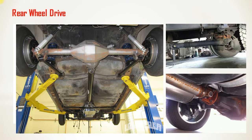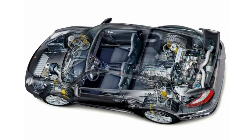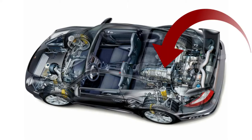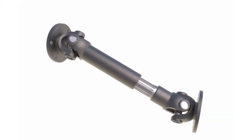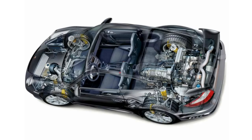In the second option, if the engine is fitted at the rear side and drive is also given to the rear wheels, it becomes rear engine rear wheel drive. In this type of layout, the engine is fitted at the back side of the car and drive is given to the rear wheels. This arrangement eliminates the necessity of a propeller shaft because the engine is mounted near the rear wheels.